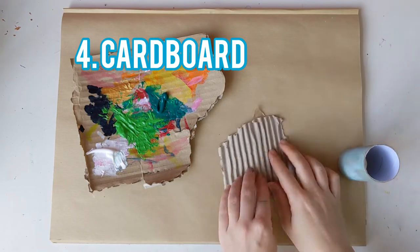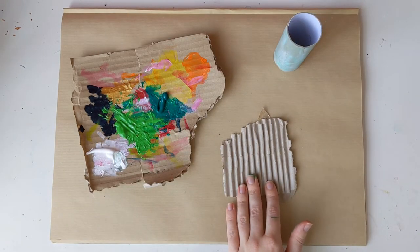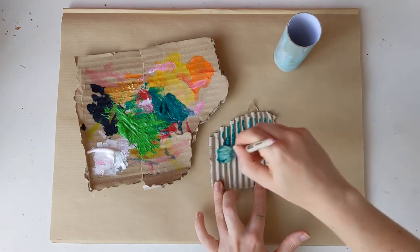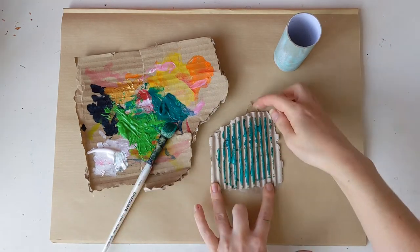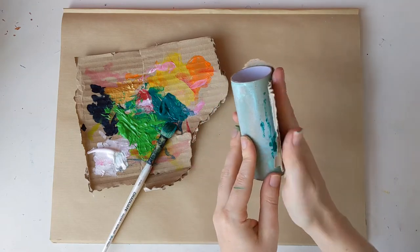I had some cardboard lying around that had this interesting pattern on the inside. So I'm going to paint it and then I'm going to press it against the toilet roll. And this leaves an interesting mark for our scales.